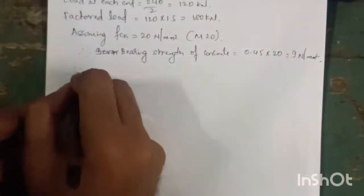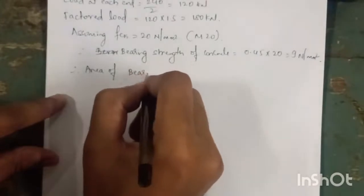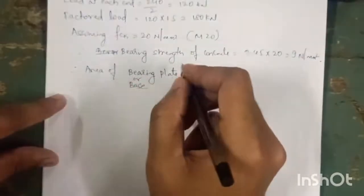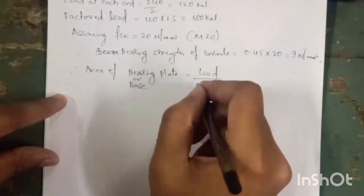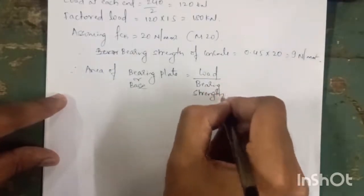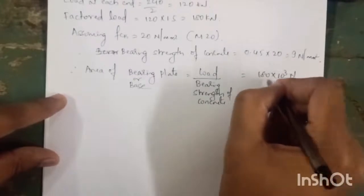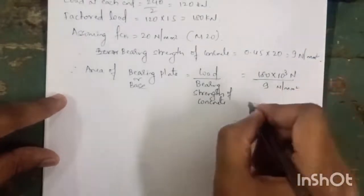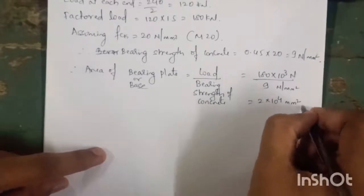Then we have to calculate the area of bearing plate, also called the base plate. The area of base plate is equal to load divided by bearing strength of concrete. Load is 180 × 10³ divided by 9, giving area required as 2 × 10⁴ mm².